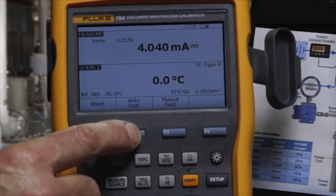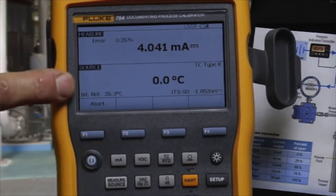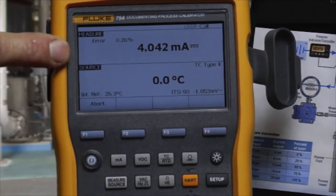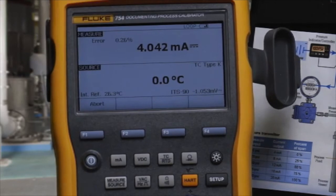Select auto test. The calibrator will apply the 0 percent temperature input, measure for 4 milliamps and calculate for error percent of span.